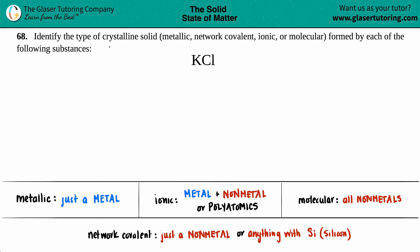Number 68: identify the type of crystalline solid, whether it's going to be metallic or a network covalent or ionic or molecular, that is formed by each of the following substances. We have KCl, so we already know that KCl is going to form a crystalline solid. There are four different types of crystalline solids; we just have to figure out which one it is.